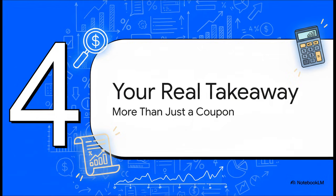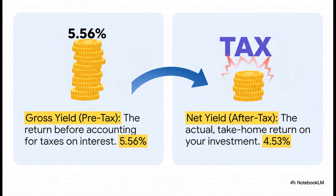So after cracking this case, what's the big lesson here? The most important takeaway is that the number you see on the front of the bond is rarely the number that actually ends up in your pocket. Let's just put them side by side for a second. We started with a 4% coupon rate.